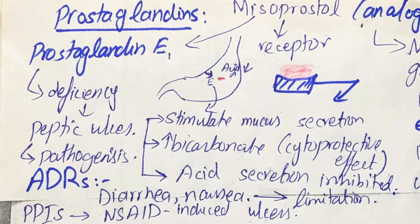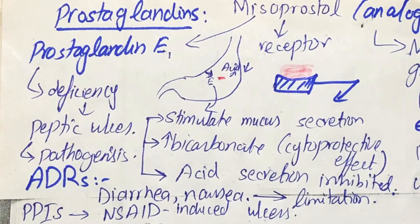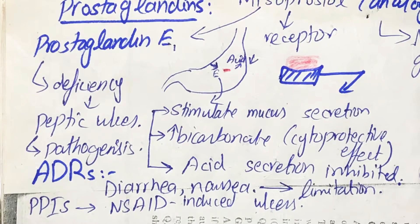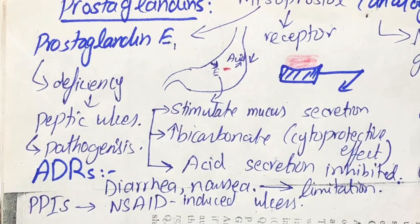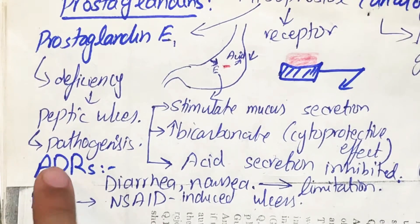To revise: prostaglandins are released from the gastric mucosa and cause inhibition of acid secretion into the stomach. They also cause stimulation of mucus into the stomach, which facilitates lining of the stomach walls. They also increase bicarbonate levels which act as cytoprotective agents. Because of their deficiency, all these factors are reversed and peptic ulcer can occur — this is how prostaglandins are involved in its pathogenesis.